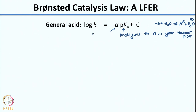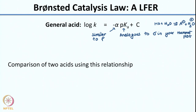Alpha is analogous to ρ in the Hammett equation. For any particular acid and a given reaction, you are looking at the tendency of the acid to protonate that substrate and comparing that tendency to its tendency to protonate water. So this is analogous to a Hammett plot: log K = −α·pKa, where α tells you how sensitive the reaction is to this protonation. This constitutes a linear free energy relationship comparing the acidity of two general acids.